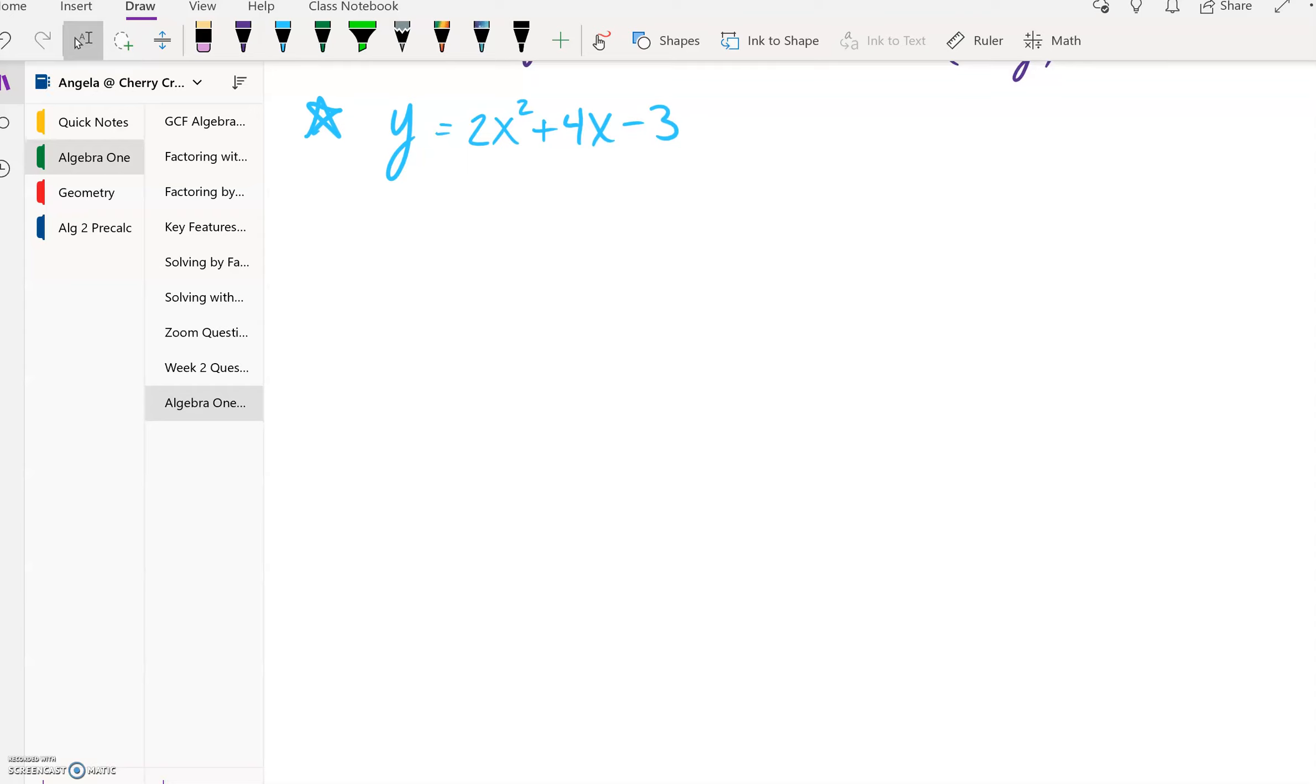So we're going to start with a = 2, b = 4, and c = -3. And I've done a lot of videos where I have identified a, b, and c first, so you guys are probably getting accustomed to seeing me go down this path.